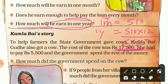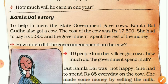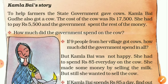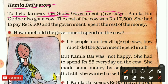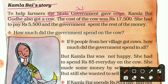The second story is Kamala Bai's story. To help farmers, the state government gave cows to farmers. Kamala Bai also got a cow. The cost of the cow was seventeen thousand five hundred rupees, and she had to pay five thousand five hundred rupees.